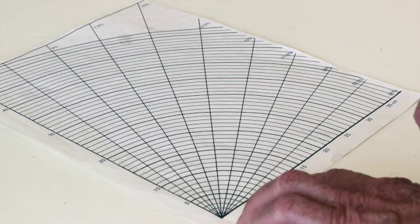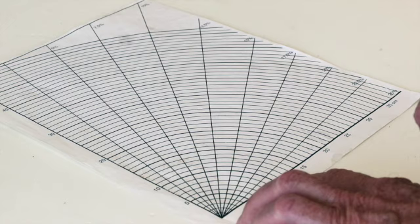In the case of rim sherds, we measure either interior or exterior diameter, depending on the shape of the sherd. Here we'll use the interior.